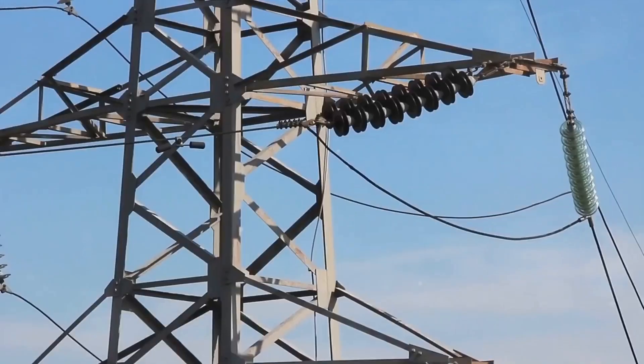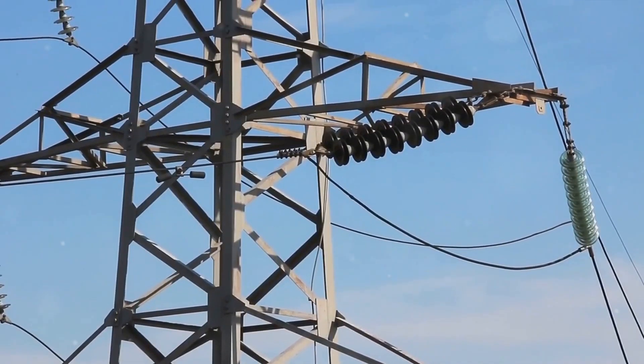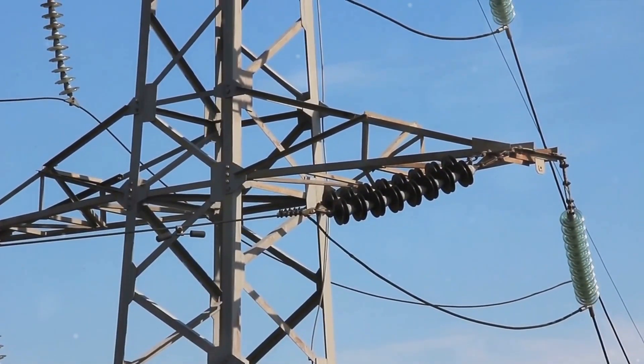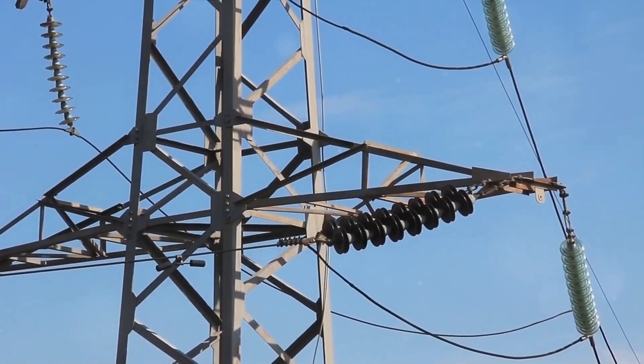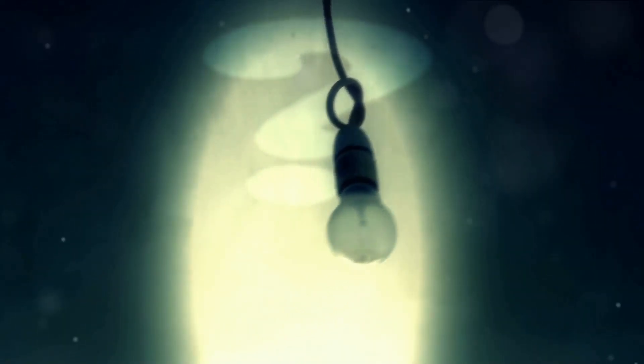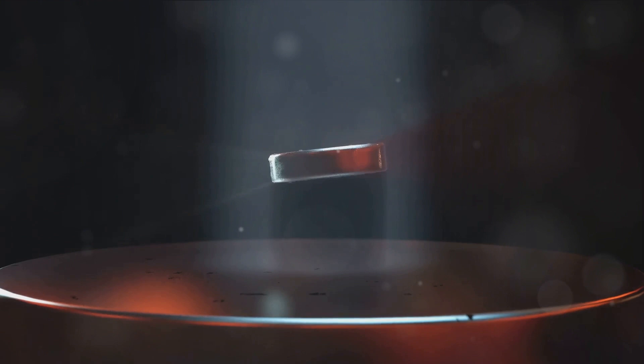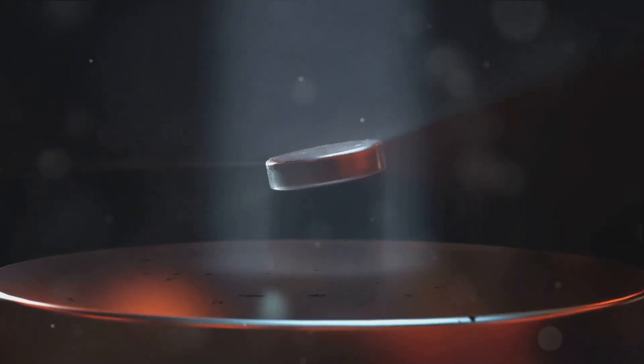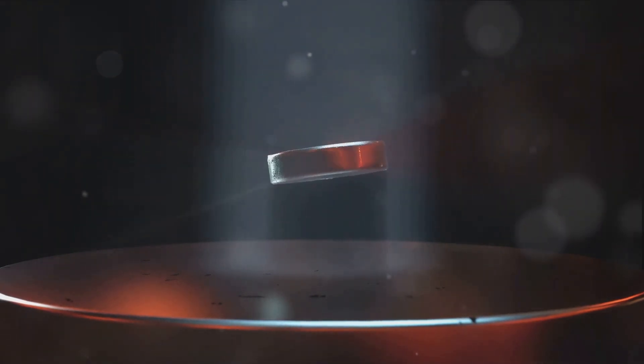Imagine electricity flowing through a wire like water through a pipe. Just as friction slows down water, electrical resistance impedes the flow of electricity. This is why a light bulb dims over time. But what if we could remove this resistance? Enter superconductors, materials that allow electricity to flow without any resistance.